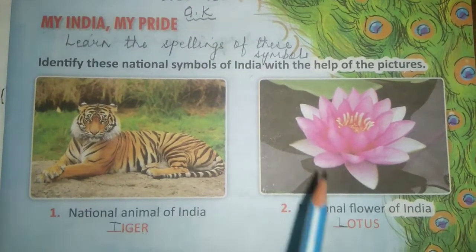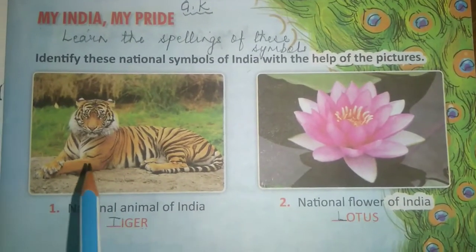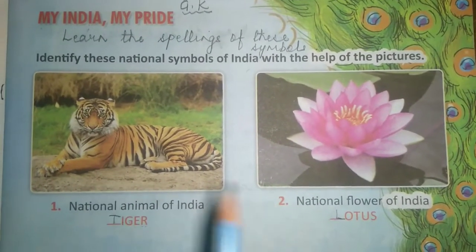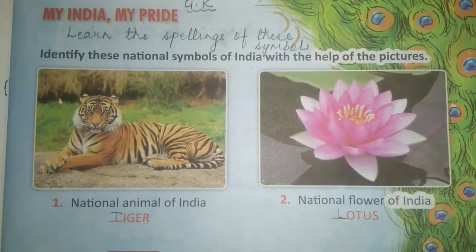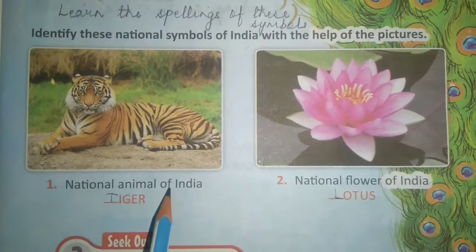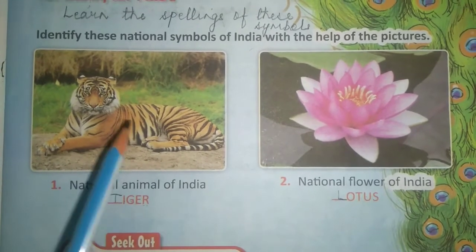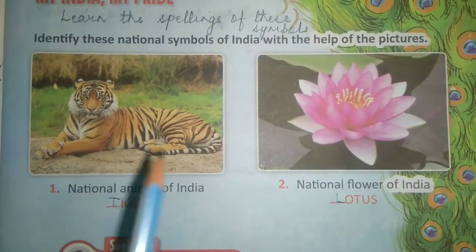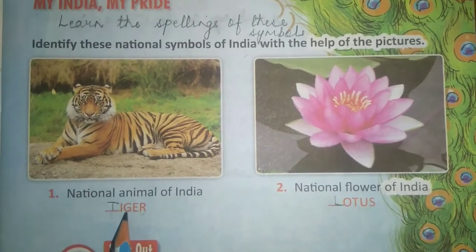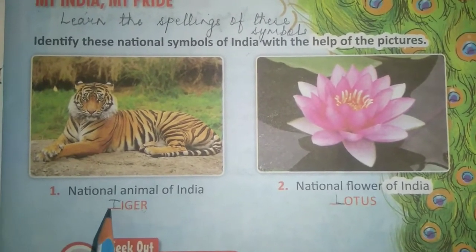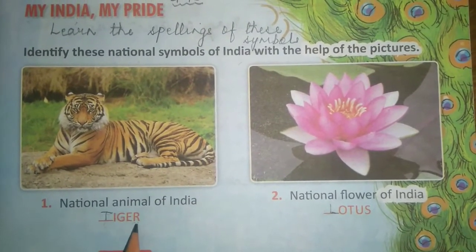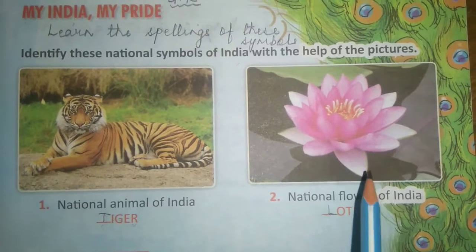There are pictures given here. You have to identify which animal, which flower, or which bird it is. The first picture is the national animal of India. Our national animal is tiger. Spelling of tiger: T-I-G-E-R. So you will write down T-I-G-E-R, tiger.